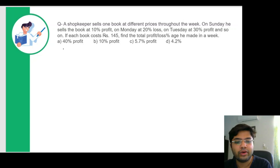So first let's try to understand what the question is saying. There is a shopkeeper who sells one book at different prices for different days of the week. So on day one, he would sell it because the cost price is 145 for everyone. So on day one, he'll sell 145 into 11 by 10.